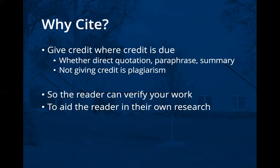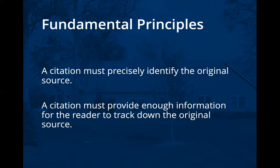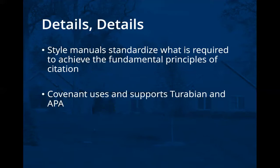So these reasons bring us to the fundamental principles of citation. A citation must precisely identify the original source, and a citation must provide enough information for the reader to track down that original source — giving credit where credit is due and helping your reader check your work and do their own research. That's where the style manuals come in: they standardize what information is required to achieve those fundamental principles.